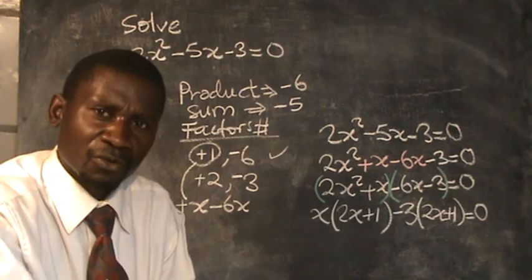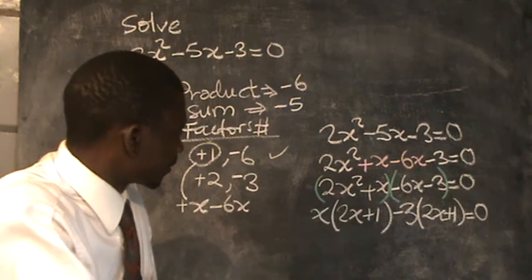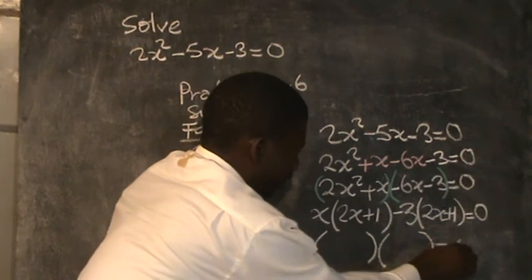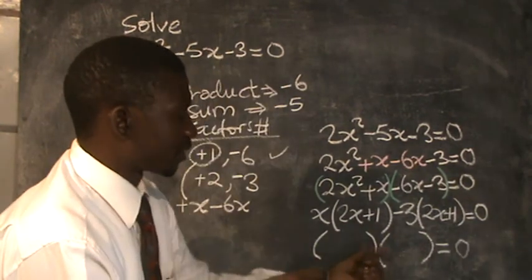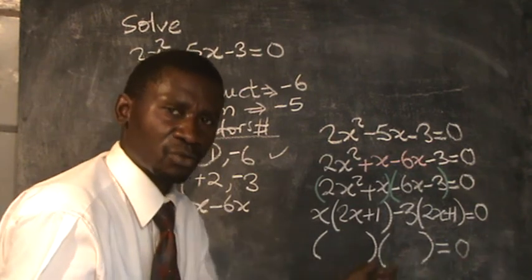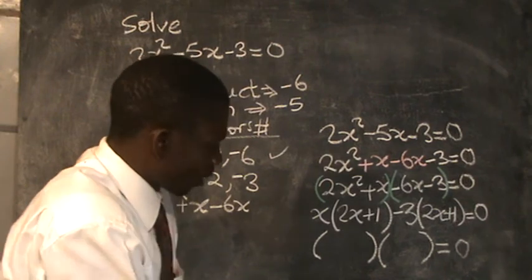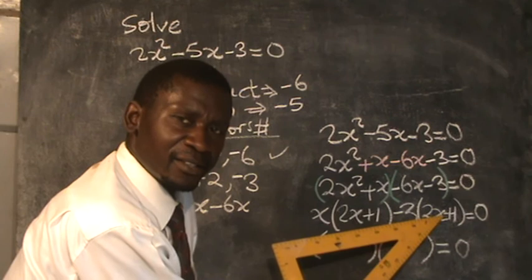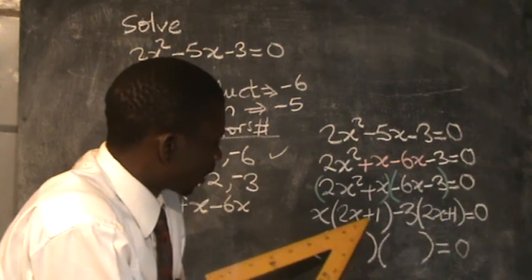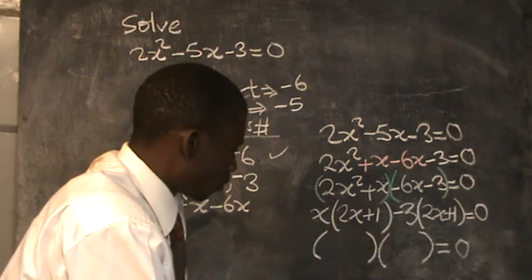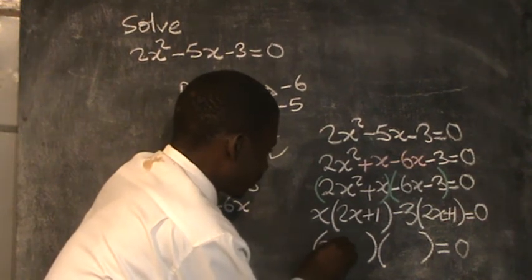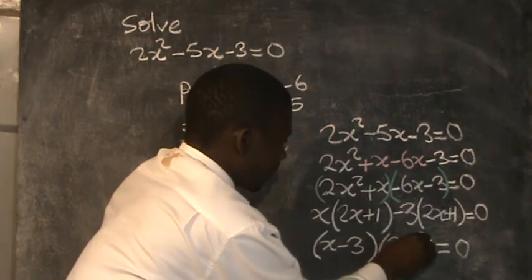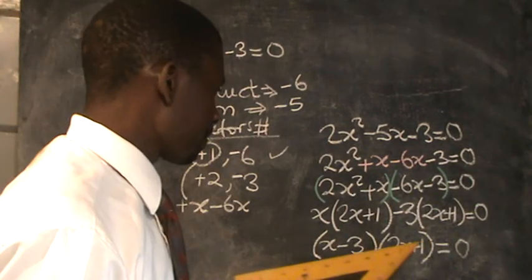Since we are solving by factoring, we factorize completely into two brackets, then set equal to 0, using the zero product property — whatever is in one bracket multiplied by the other bracket equals 0. It can be seen that both groups contain 2x plus 1, confirming we are on the right track. Outside the brackets we have x and minus 3, giving the final factored form: (x minus 3)(2x plus 1) equals 0.